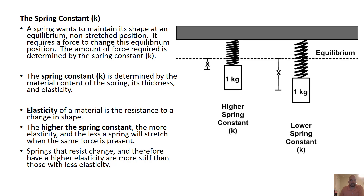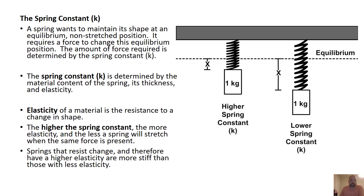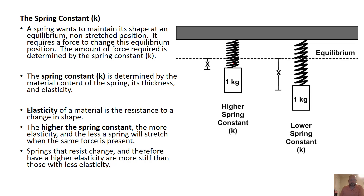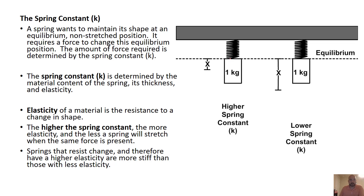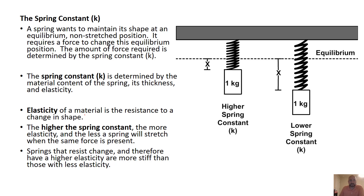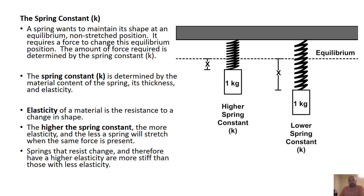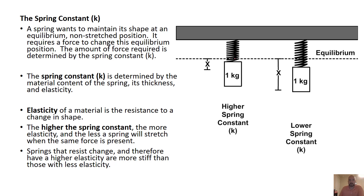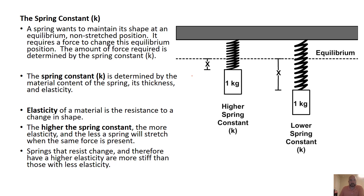The amount of force required is determined by the K value. The spring constant K is determined by what the spring is made of — the kind of metal, rubber, or whatever material — its thickness and elasticity. Elasticity refers to resistance to changing shape. More elastic actually means something solid, versus something gaseous which changes shape easily. The higher the spring constant, the more elasticity, so the more resistance to change.